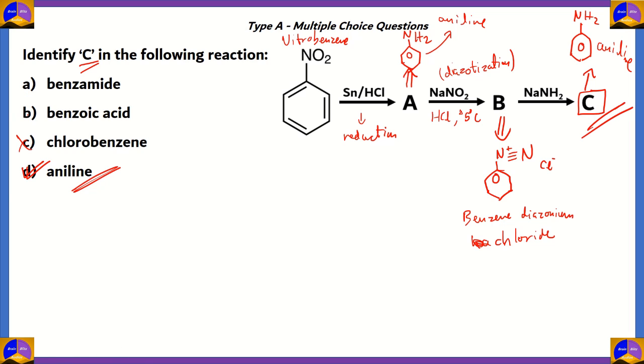It's not chlorobenzene because chlorobenzene would have a Cl and a benzene group. Benzoic acid would have a COOH group. And benzamide would have an N2 group. So, therefore, all the other options are incorrect. The right option is option D aniline.